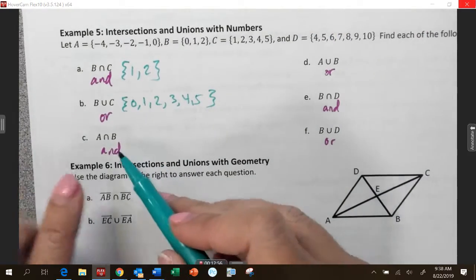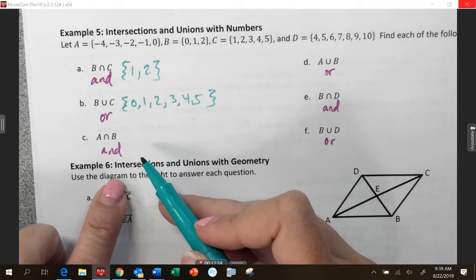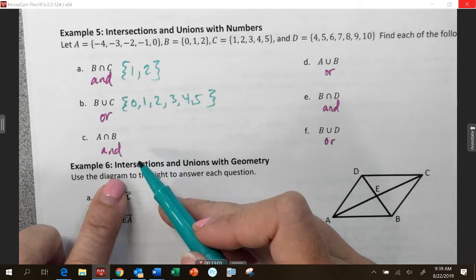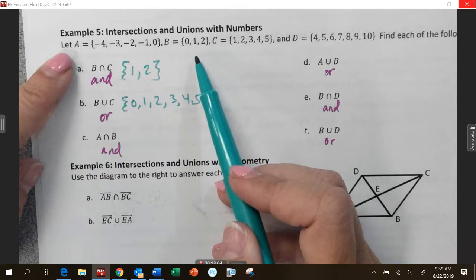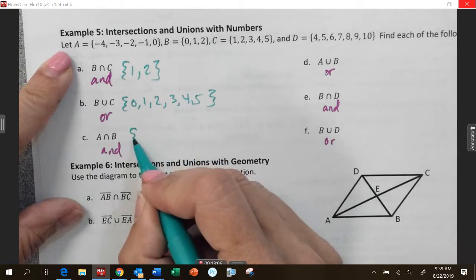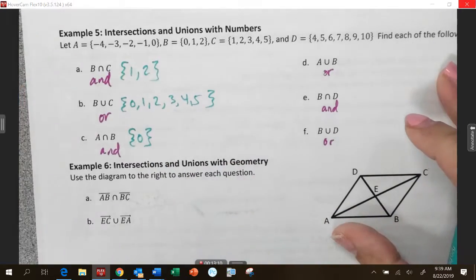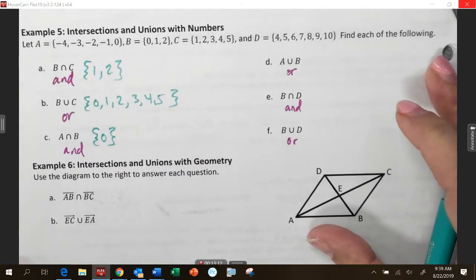Next is A intersection B. So, intersection is and. It has to be in both. A and B. What's in both? Zero. Zero. Okay. So, just the number zero gets in the fancy bracket. Do your best in drawing those. I know they're hard.